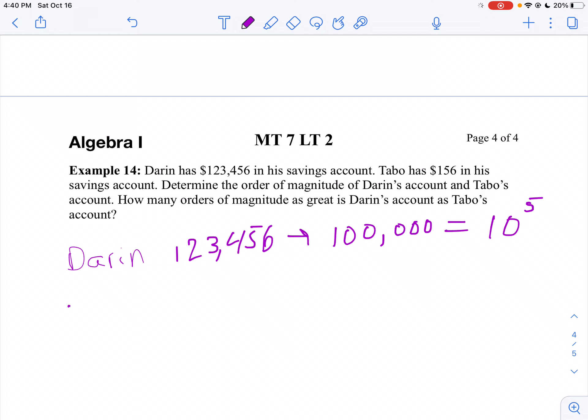Now we'll take a look at Tabo. We'll do the same thing. Tabo has $156. I'm just going to round that down to the nearest $100, so that's the same thing as $100. There are two zeros, so that's 10 to the 2nd, or an order of magnitude of 2.